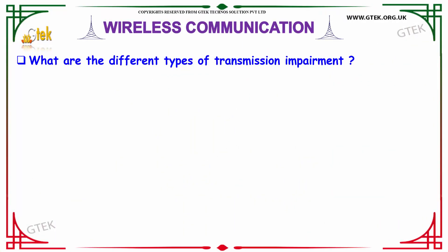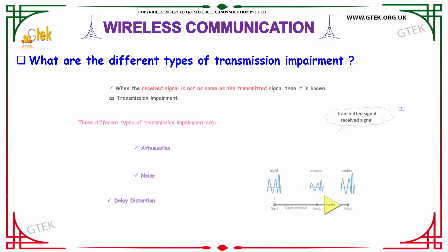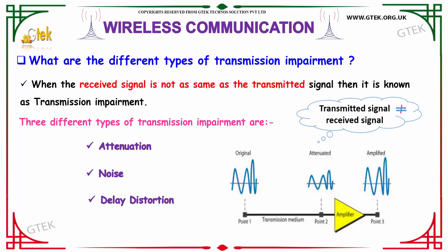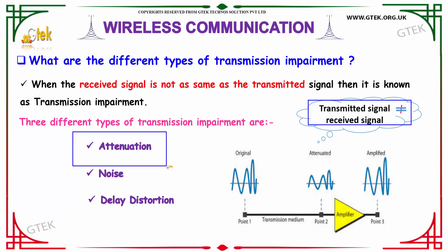What are the different types of transmission impairment? When the received signal is not the same as the transmitted signal in certain cases, it is known as transmission impairment — your transmitted signal and received signal will be different. There are three different types of transmission impairment: attenuation, noise, and delayed distortion.